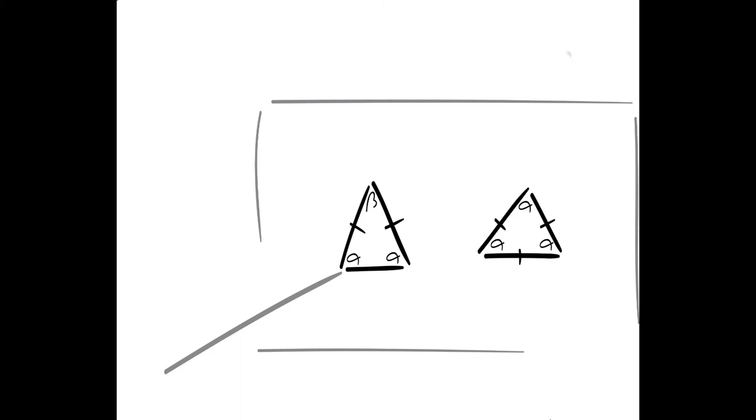Our first one here is an isosceles triangle. An isosceles triangle is a triangle that has two sides equal. A lot of times in the diagram, you will just see two marks like that. And if each side is marked with the same mark, then that means those two sides are equal to each other.